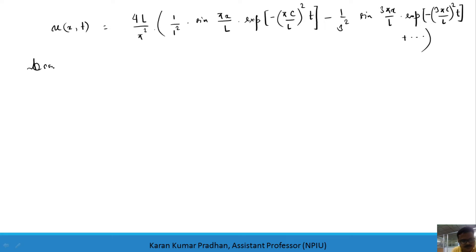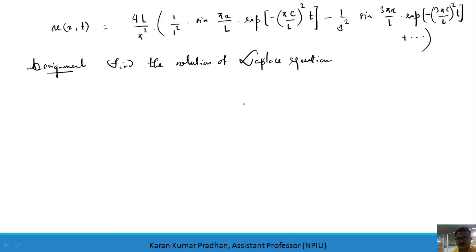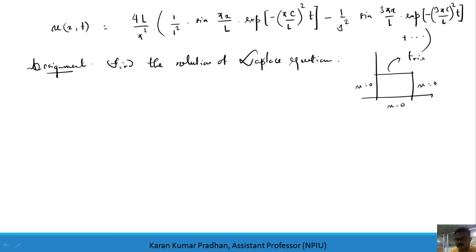As an assignment, find the solution of the Laplace equation using the same approach — with triangular initial temperature applied along one edge of a rectangular plate while all other edges are at zero temperature. This is the steady-state heat flow problem for a rectangular plate, giving the Laplace equation. Now let's move to the previous year GATE questions.